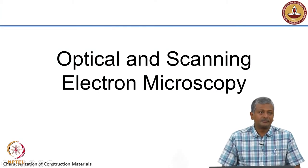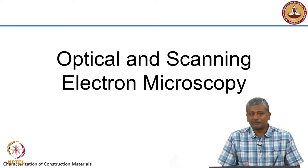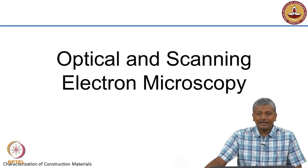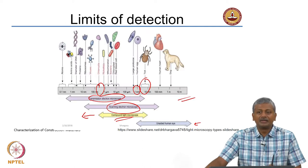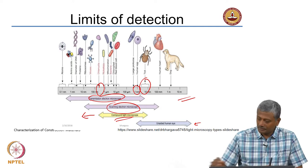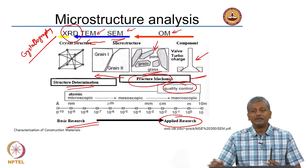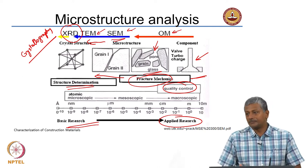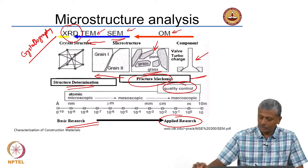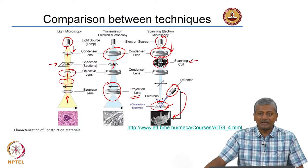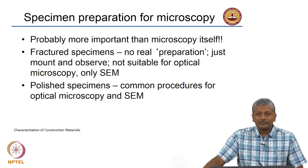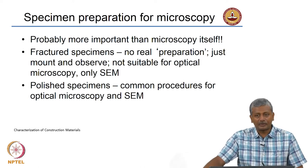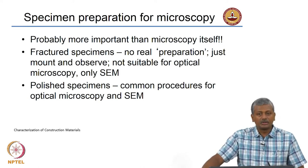Hello everybody. We started off talking about differences between different types of microscopy yesterday. We were looking at typical techniques of microscopy that are available and in general what are the major aspects that you can actually observe with different kinds of techniques. We also saw what the reasons for doing different types of microscopy were — what kind of answers can you get — and the primary differences between optical microscopy, scanning electron microscopy, and transmission electron microscopy. We also talked briefly about specimen preparation for microscopy, which is very crucial in the process of actually getting a good image from a microscopic technique.